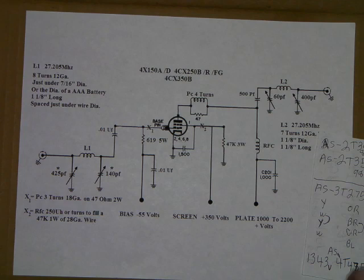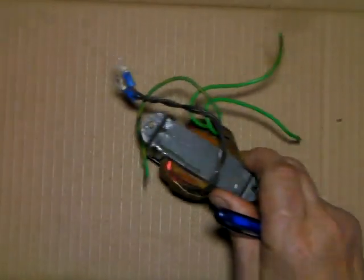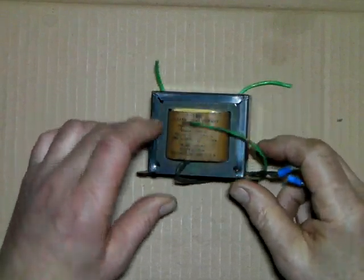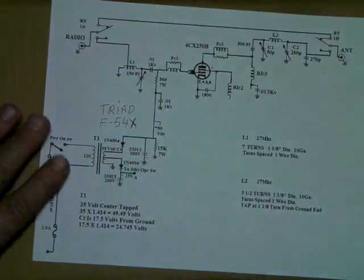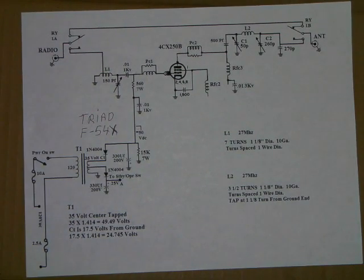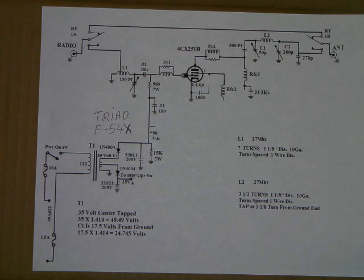For bias, you need about 55 volts. The original transformer on the demo unit was from a tube tester. It was 35 volts and it was a Triad F-54X.